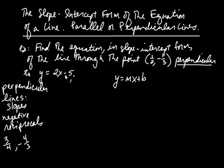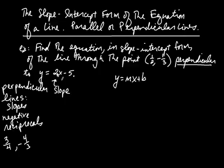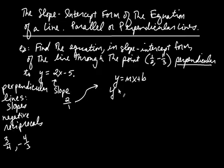The other line is y equals 2x minus 5, and that two is the slope of the other line. Because our line is perpendicular to this line, the slope of our line is the negative reciprocal of two — that's two over one. So the negative reciprocal gives us a slope of negative one-half.